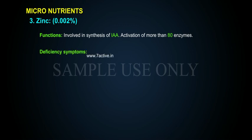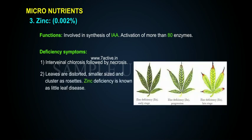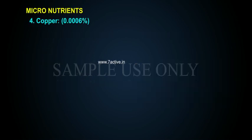Deficiency symptoms of zinc: interveinal chlorosis followed by necrosis. Leaves are distorted, smaller sized, and clustered as rosettes. Zinc deficiency is known as Little Leaf disease.